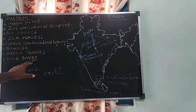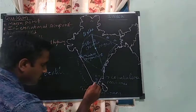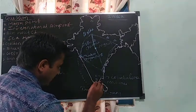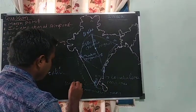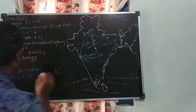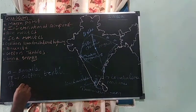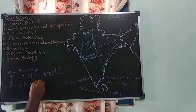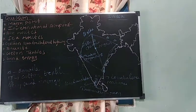Next one is wind energy. The famous place for wind energy in India is Kudankulam, in the Kanyakumari District. Give the wind symbol for Kudankulam and write 'Wind Energy' on the map.